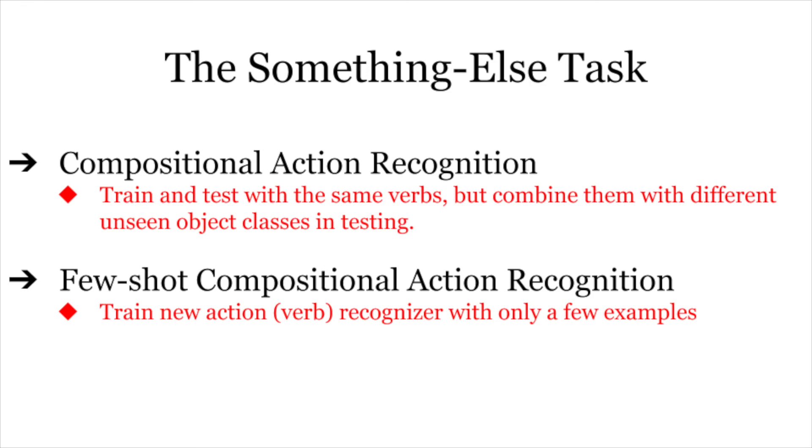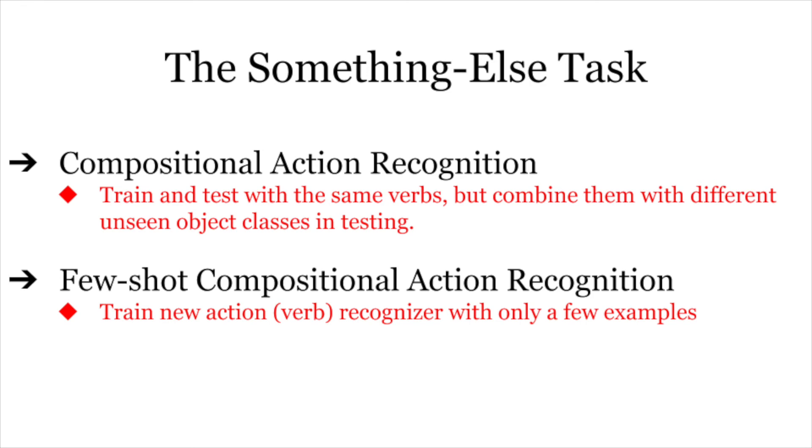The second is few-shot compositional action recognition, which indicates how well a model can generalize to novel action categories with only a few training examples. Our approach outperforms baseline models on the proposed tasks by a large margin.